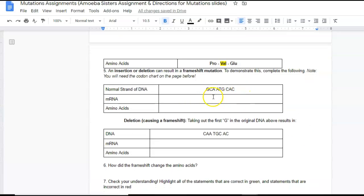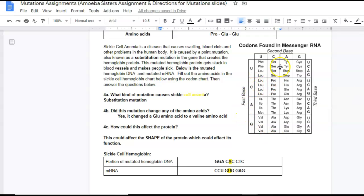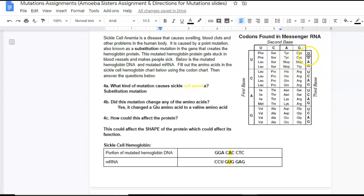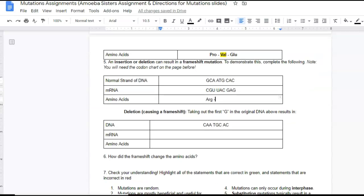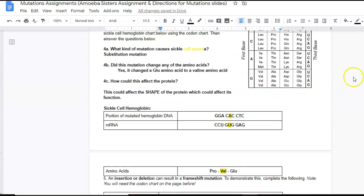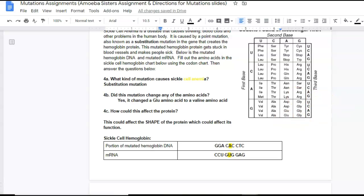So then you can do the same thing here. Here's the normal DNA. Let's do the mRNA: C-G-U-U-A-C-G-A-G. And then what would the amino acids be? Arginine, tyrosine, and glutamate.